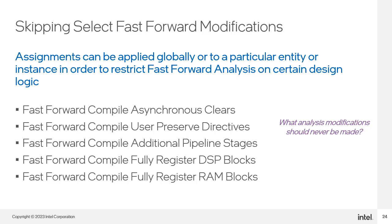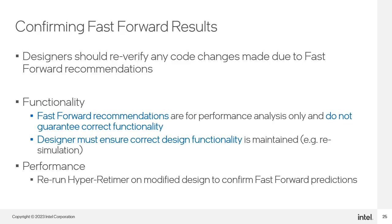Once you have applied the recommendations from your Fast Forward Compile to your design logic, you want to confirm the performance and functionality of the results. For performance, you want to verify the predicted performance of the design by recompiling, the goal being to run the design with just the HyperRetimer and no additional Fast Forward Compile analysis. For functionality, note that Fast Forward is purely a performance analysis tool. It is up to you to ensure, while implementing the recommendations, that any changes you are making do not break the design's expected behavior. So you must re-verify functionality by running the modified design through your simulation test suite again.